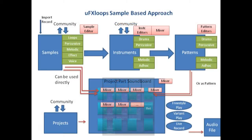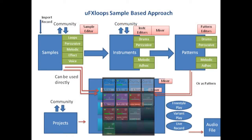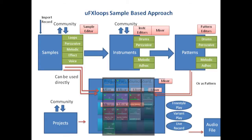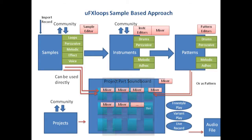This picture explains the production chain with the soundboard in the middle and the participating objects like samples, instruments, patterns and projects around. All important objects representing sounds are community based, and currently this is already implemented for samples and will be available for instruments and projects in September.